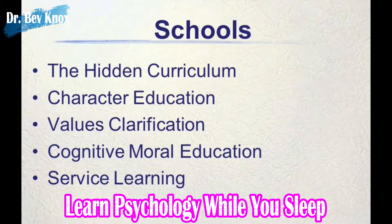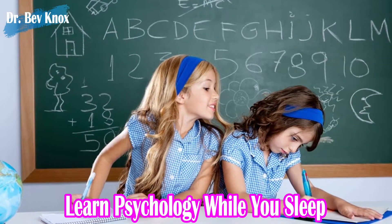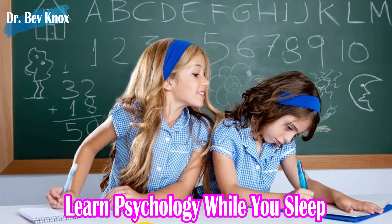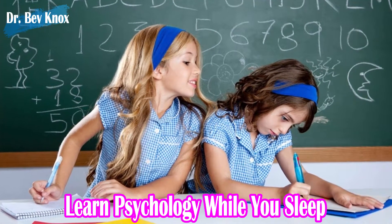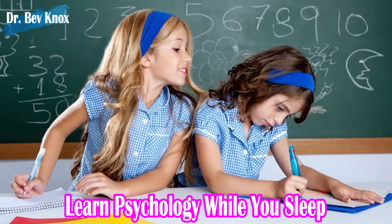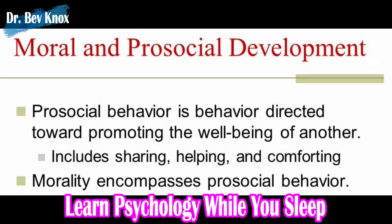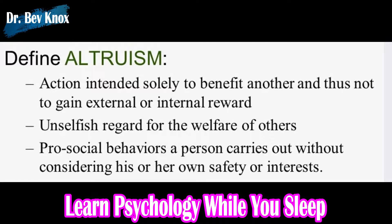Also important is modeling moral behaviors and averting misbehavior before it takes place. In schools, the hidden curriculum — described by Dewey — is the moral atmosphere of each school. Contemporary approaches to moral education include character education, values clarification, cognitive moral education, service learning, and integrative ethical education. Cheating is a moral education concern that can take many forms. Various aspects of the school situation influence whether students will cheat or not.